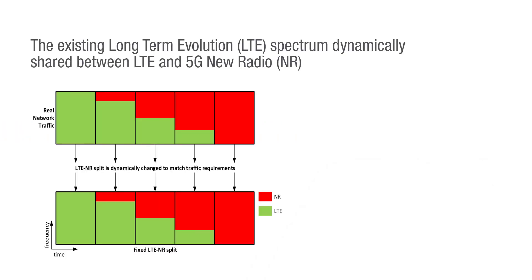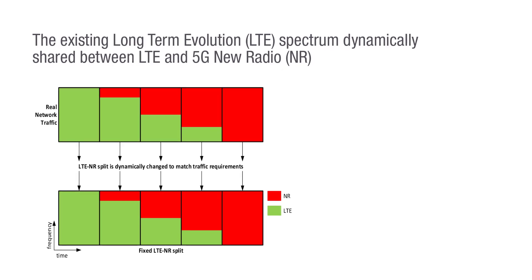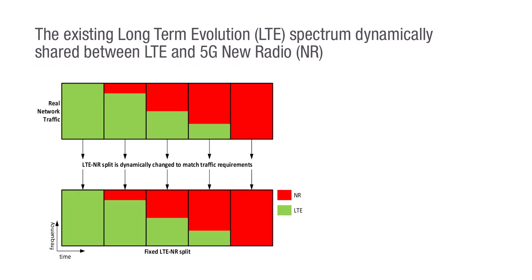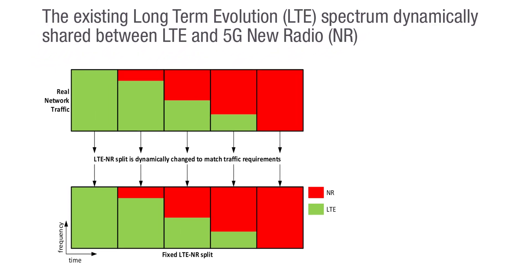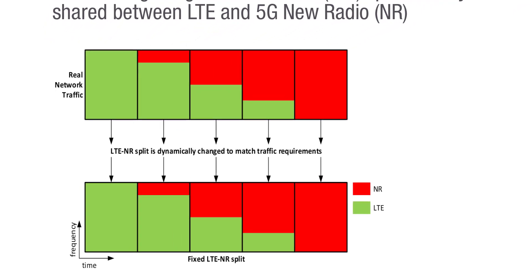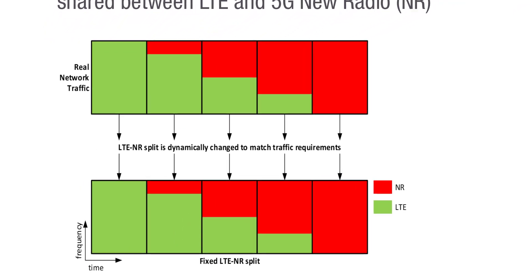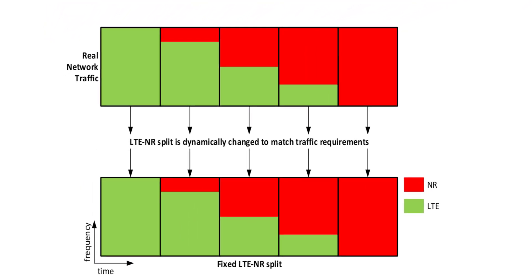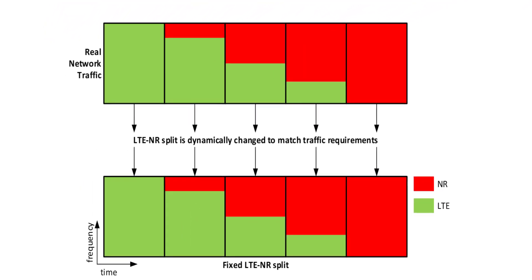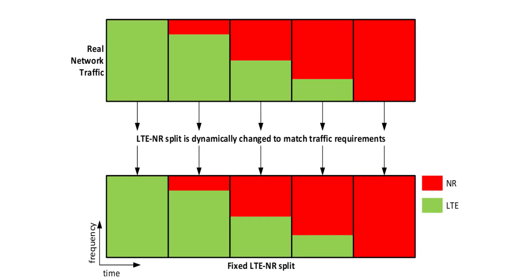Dynamic spectrum sharing is a technique where LTE spectrum allocation is dynamically shared between 5G New Radio and LTE users, depending on the load and traffic demand from the two technologies. The base station dynamically changes the spectrum allocation to use more of the spectrum for 5G or LTE. As a result, the split in the spectrum between LTE and 5G changes over time.